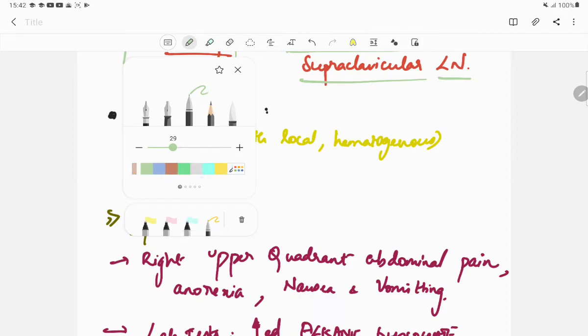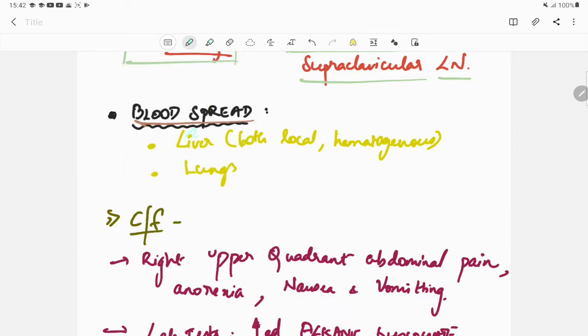Coming to the blood spread, that is the hematogenous spread: hematogenous spread is to the liver and the lungs. But in case of liver, there is both local and hematogenous spread.